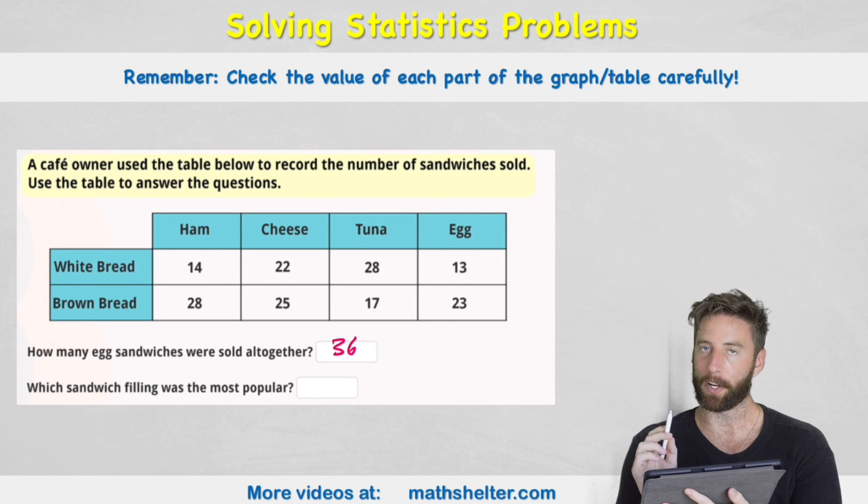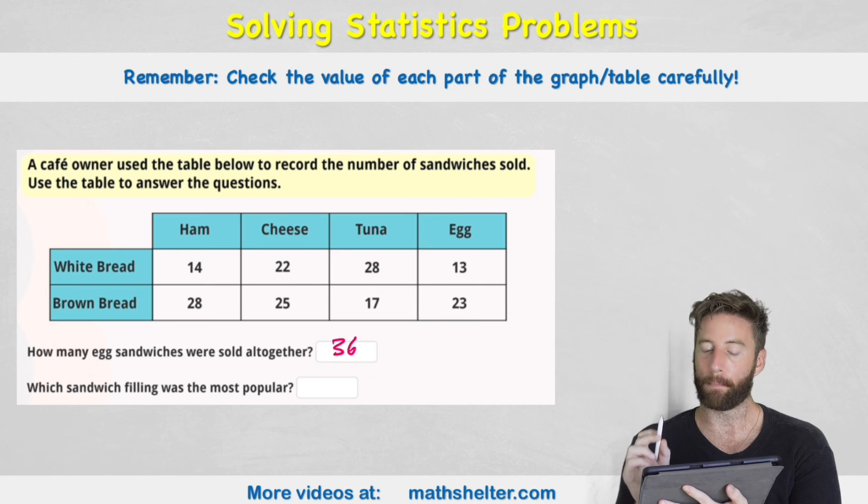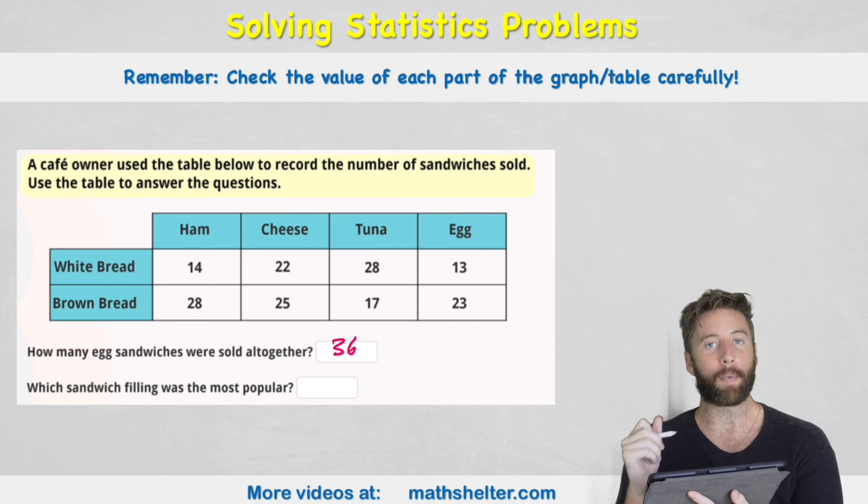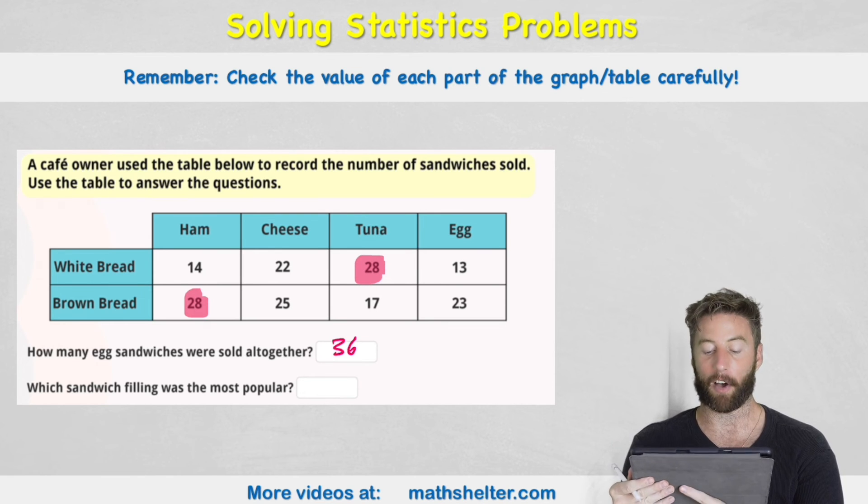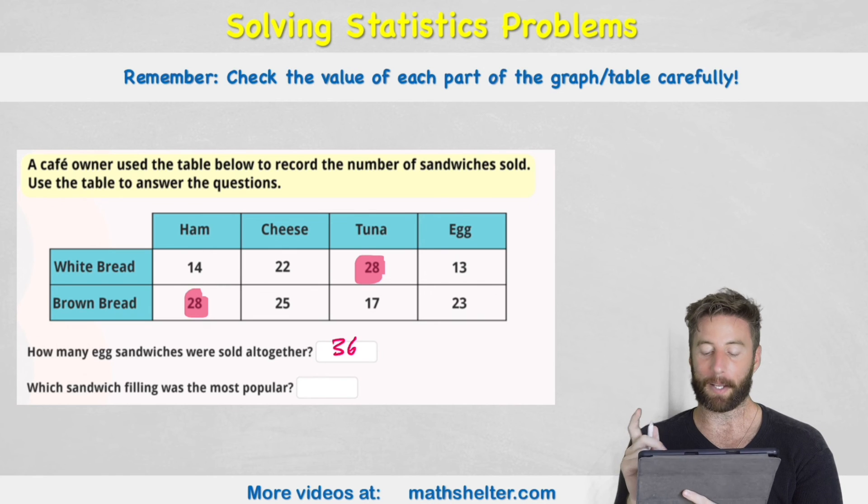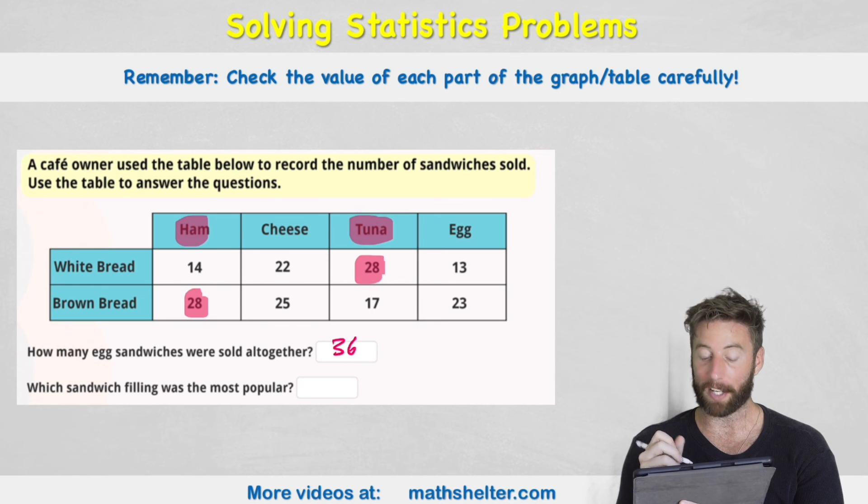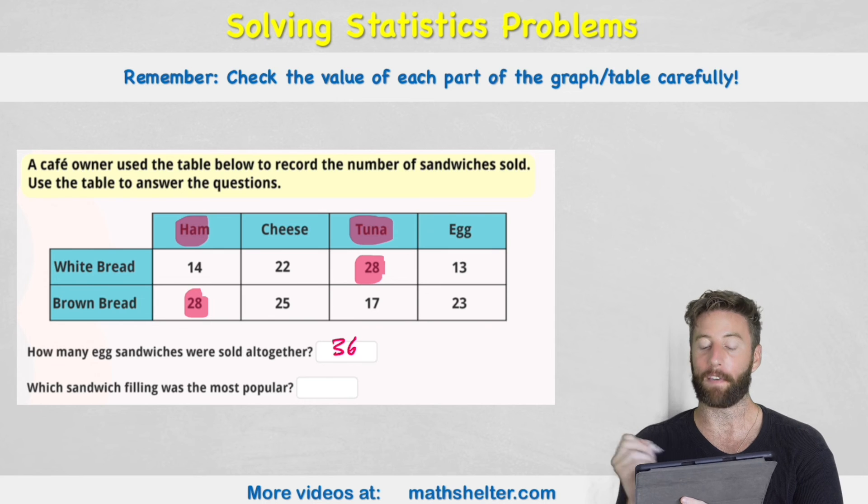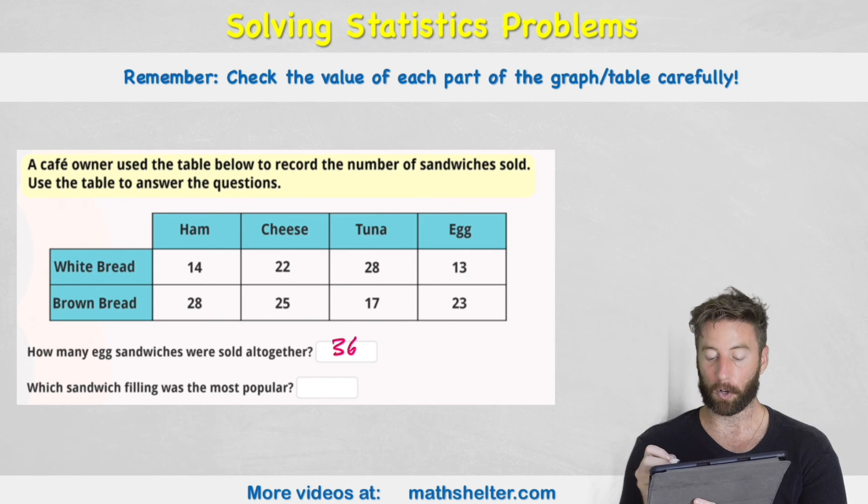Okay now we have a pretty tricky question because it says which sandwich filling was the most popular? So when we see this we might try and just find the biggest number which is this 28 or even this 28 and think that that's our final answer. But it's not because it's asking us which filling is the most popular. So we need to work out how many are sold all together of each of the four fillings. So what I've got to do is add up all of the totals for each of the four ingredients.